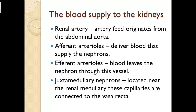Blood supply to the kidneys — more terms. The renal artery originates from the abdominal aorta. Two important arterioles: afferent arterioles deliver blood that supplies the nephron, and efferent arterioles carry blood leaving the nephron. Juxtamedullary nephrons are located near the renal medulla, down towards the inner core. Their capillaries are connected to the vasa recta.